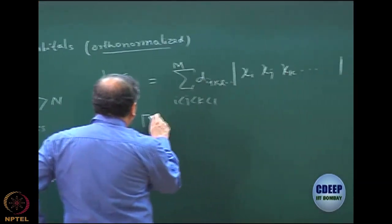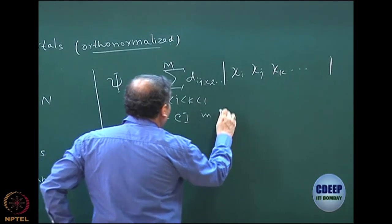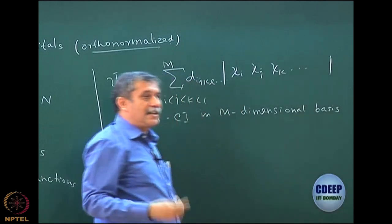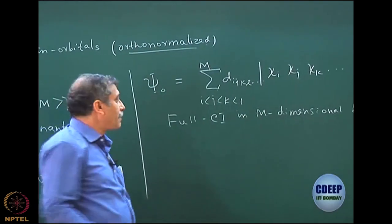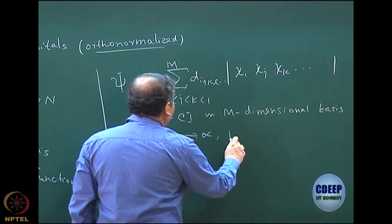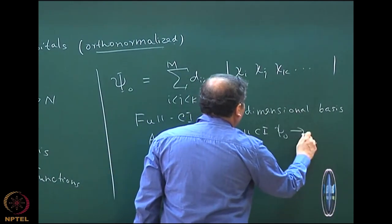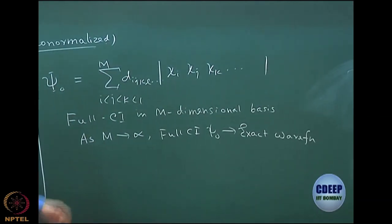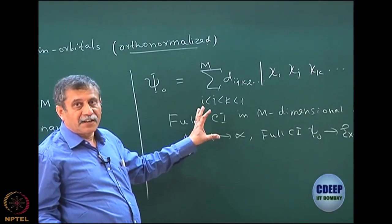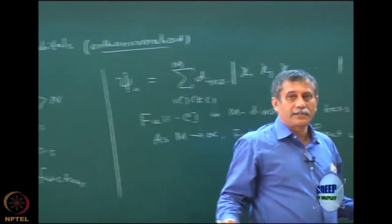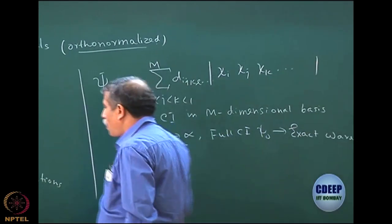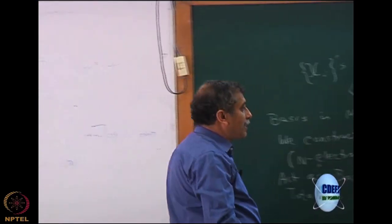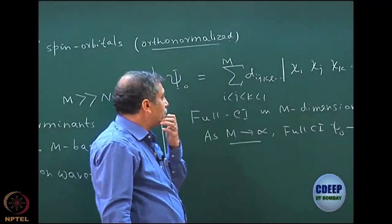This function, if you include all determinants, is what I call full CI in an m-dimensional basis. I make my point very clear: it is not necessarily exact, but it is a full CI function in an m-dimensional basis. As m goes to infinity, this full CI function psi_0 goes to the exact wave function. Full CI, or full configuration interaction, essentially means I have taken all mCn determinants within this basis. I can keep pushing the value of m as large as possible, making this full CI function as exact as possible.